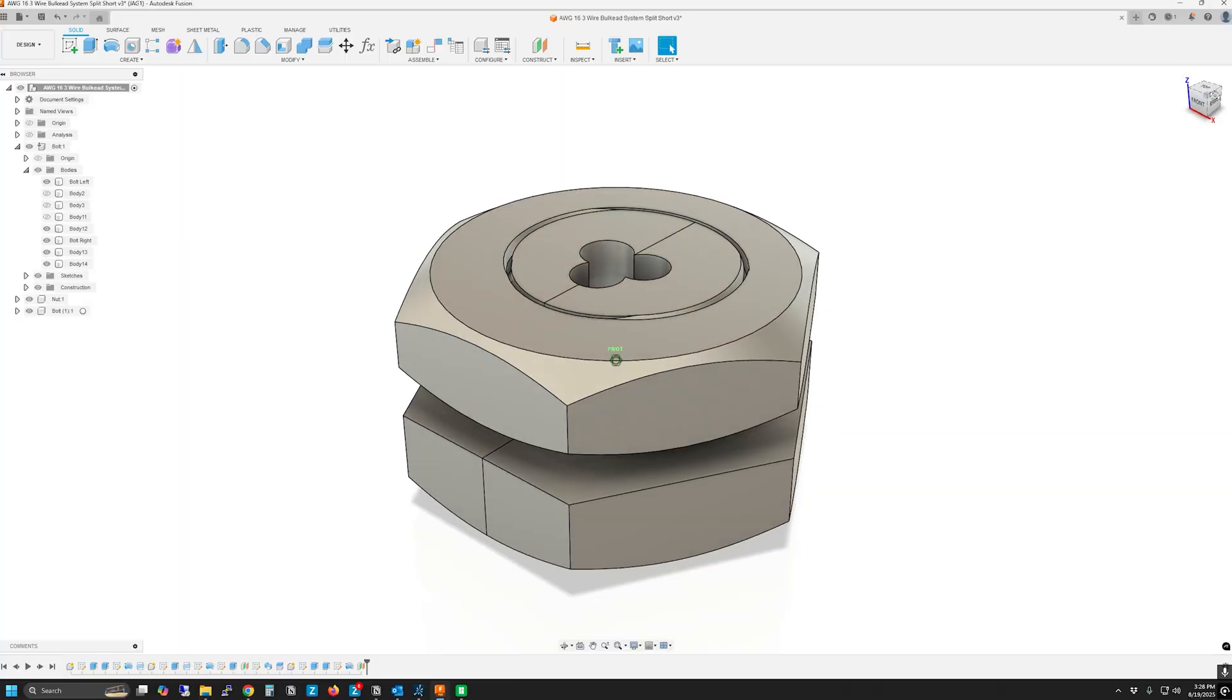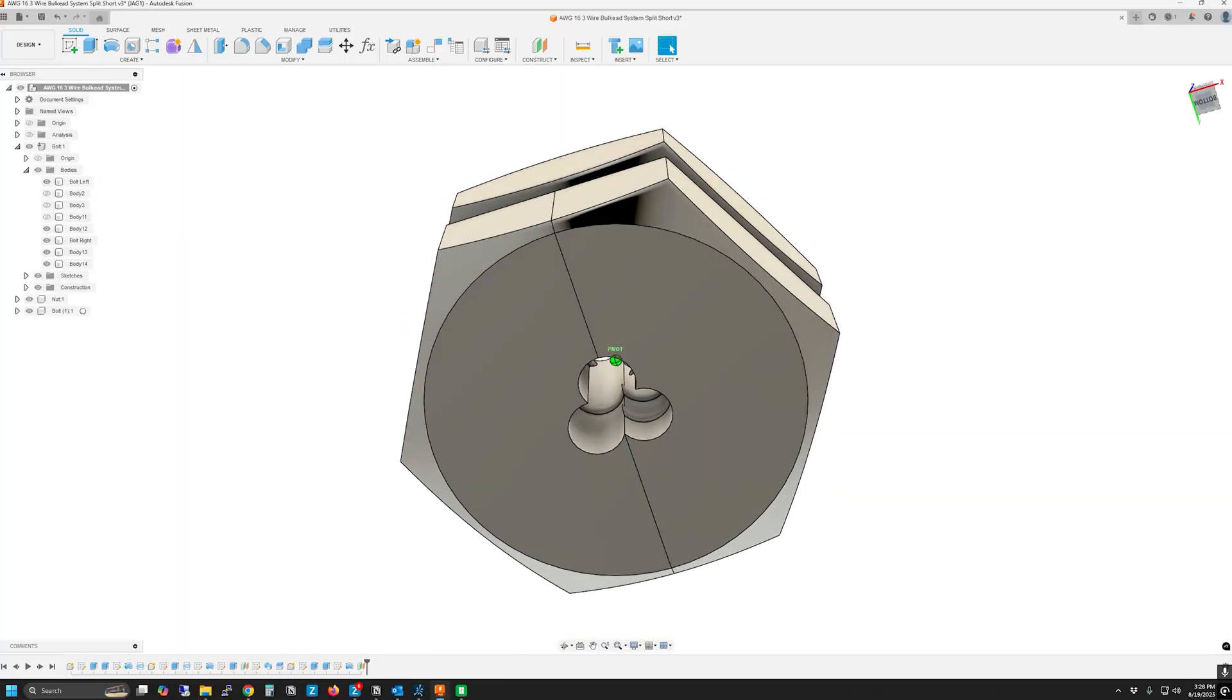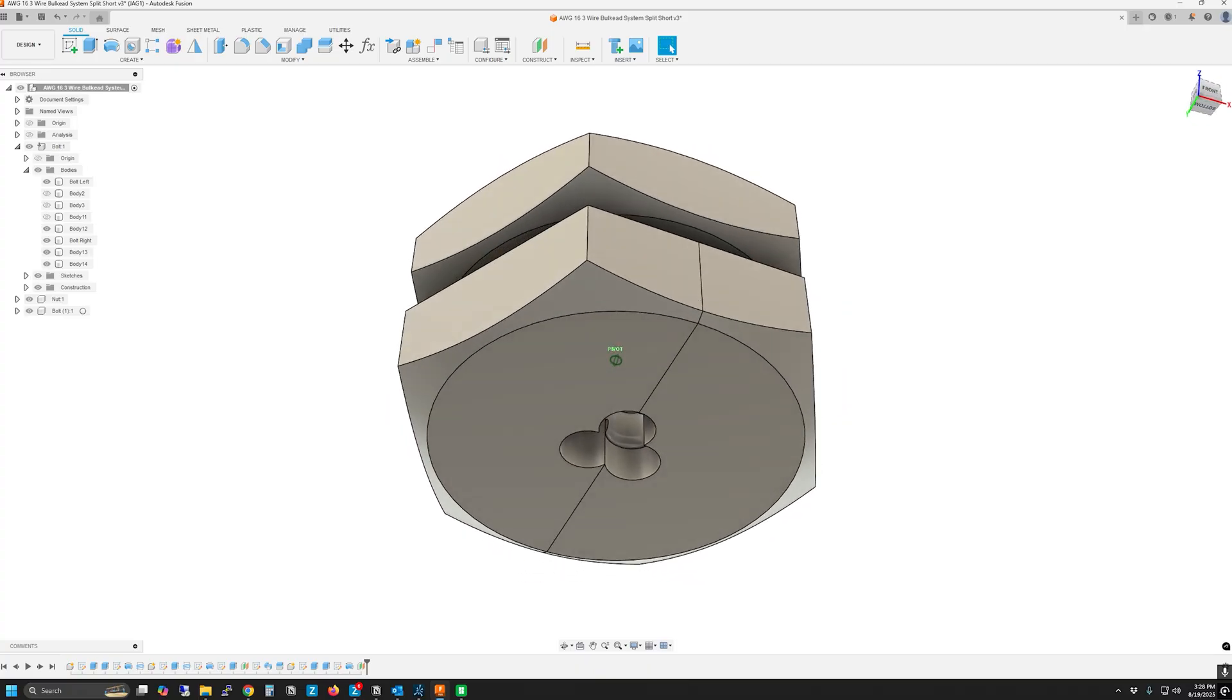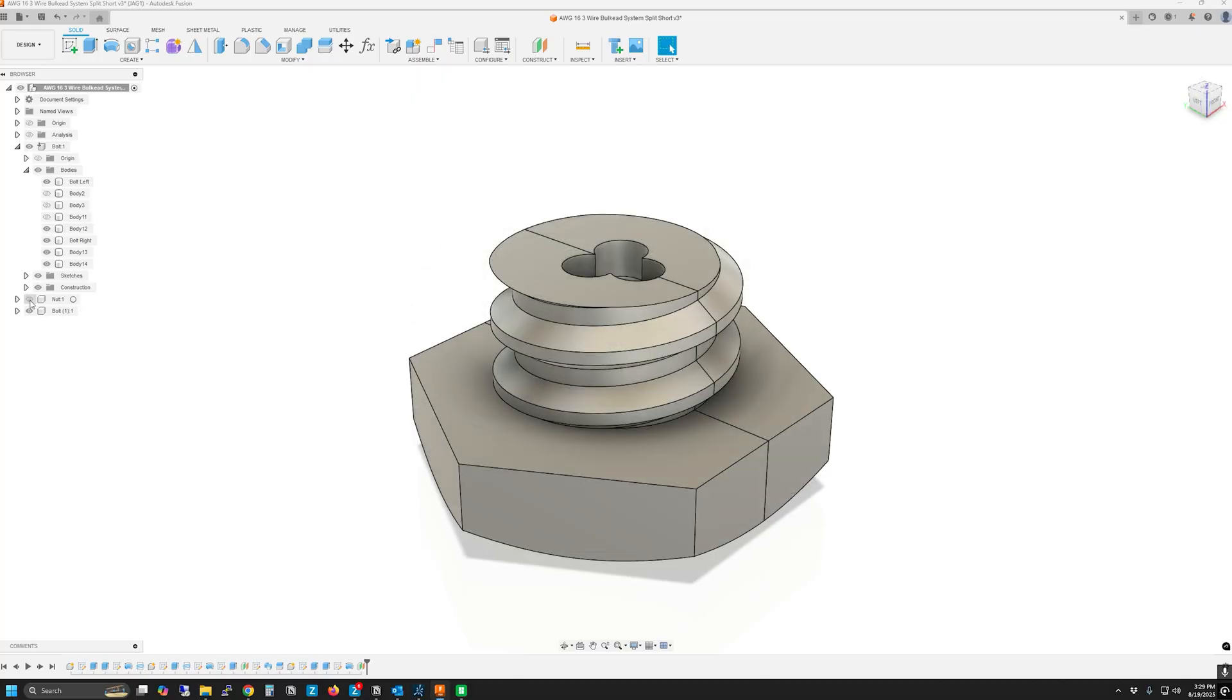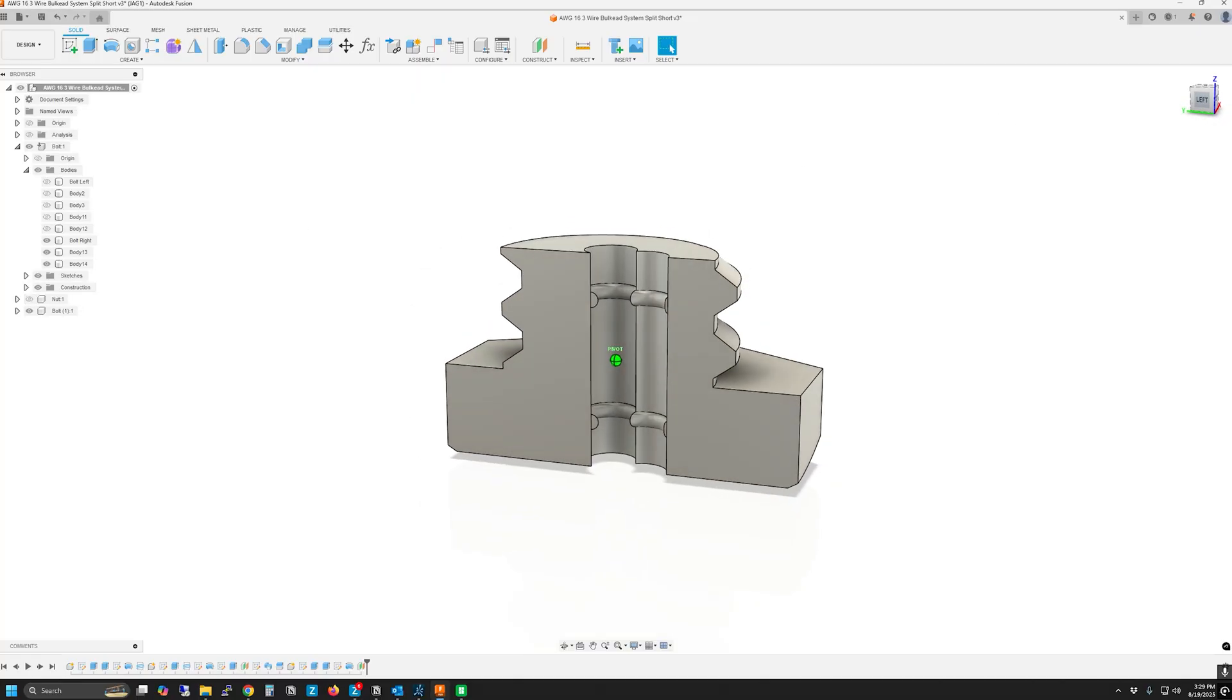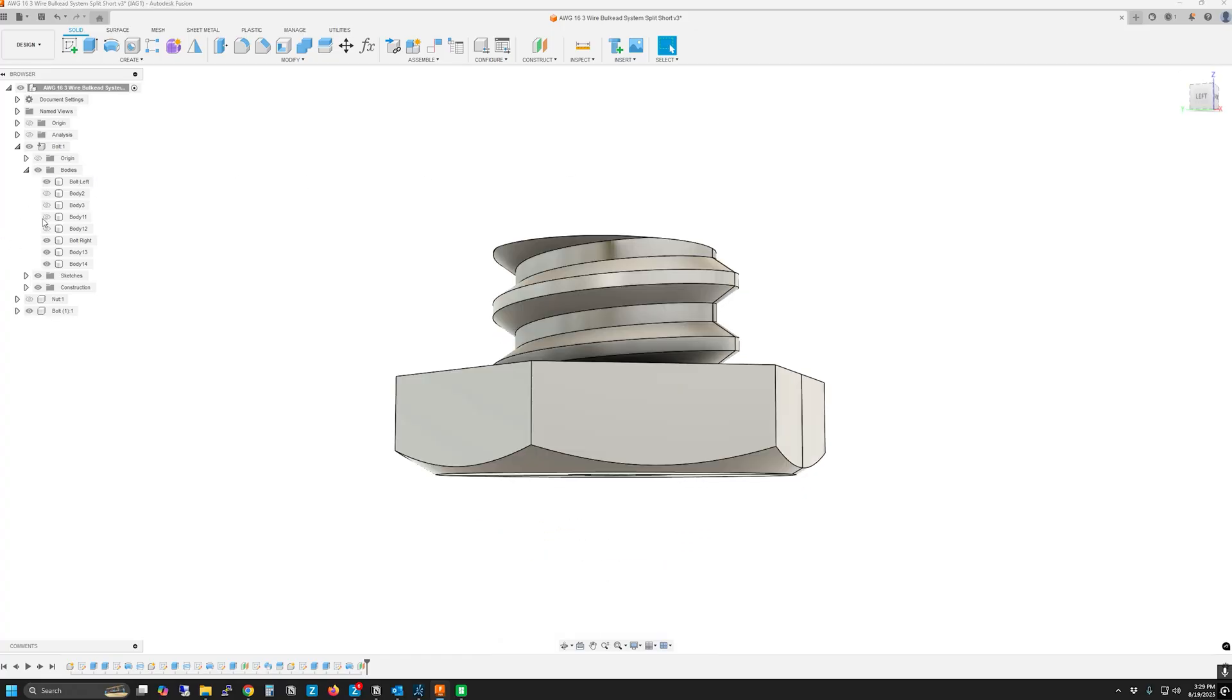In Fusion, I designed a bulkhead wire grommet to keep the wire exactly where I placed them. It's essentially just a large screw that has three holes in it for the wires and is split in half to facilitate installation. It's held together with a large nut.